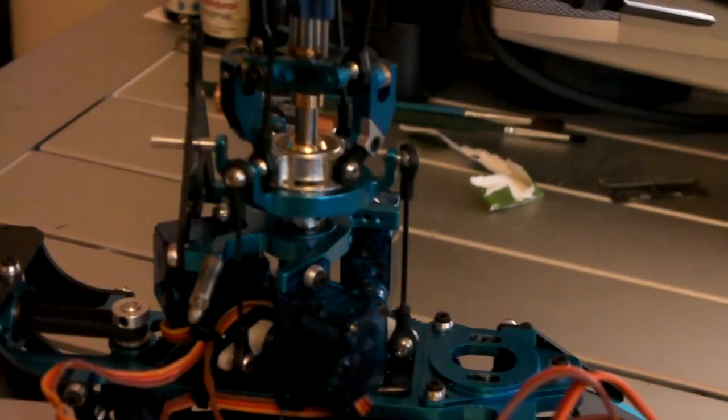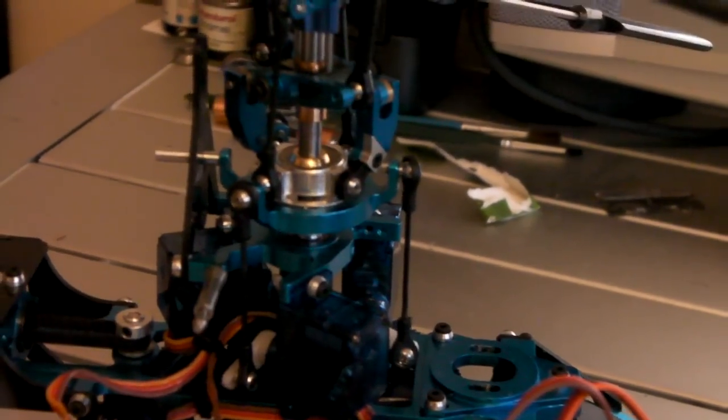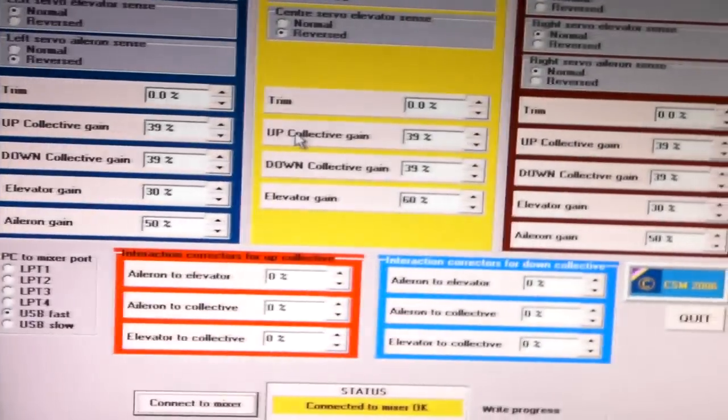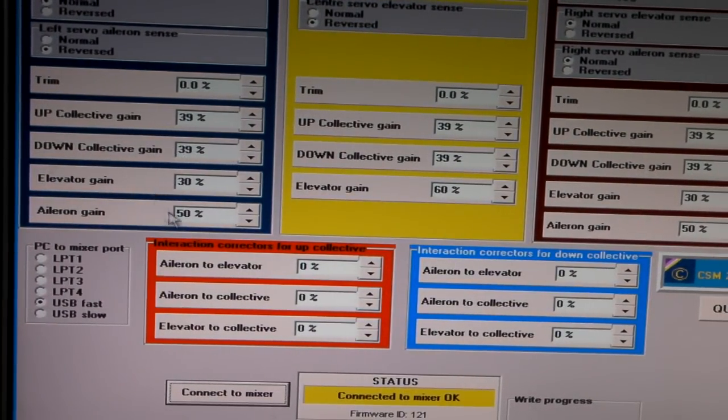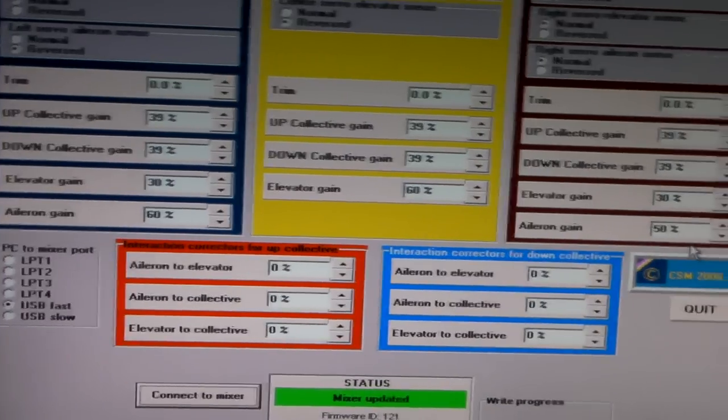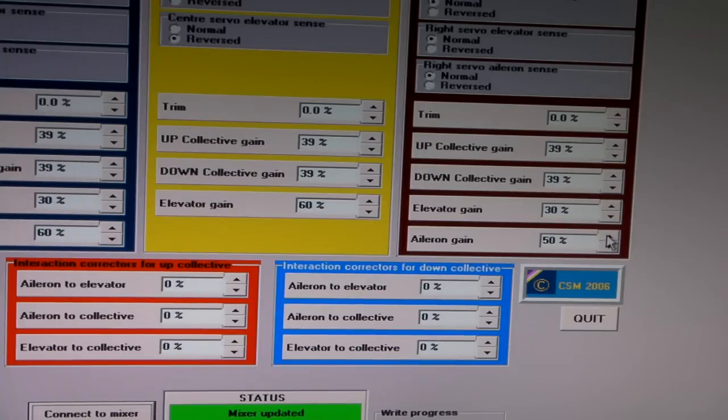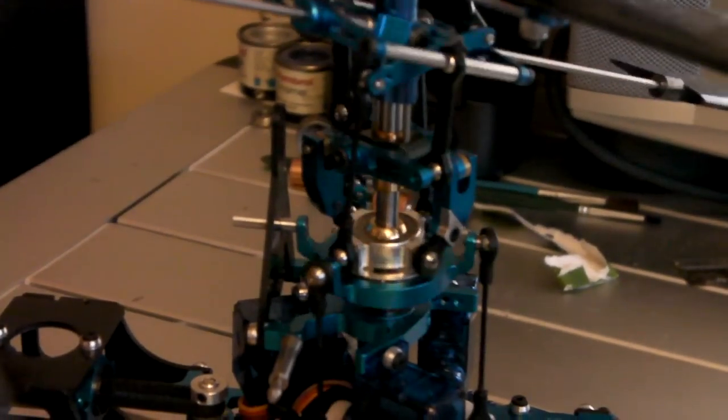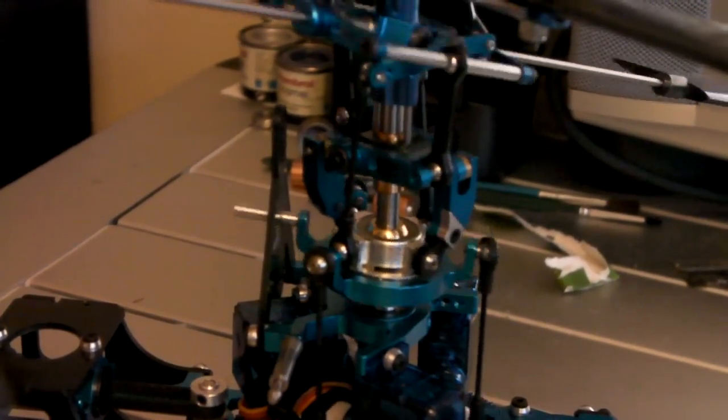You can see it needs a bit more movement, so we're going to go to the computer and crank the aileron up to 60% left and right. I'm going to change the aileron channel to 60%. Now we go back to the helicopter—we've got left and right, forward and back.